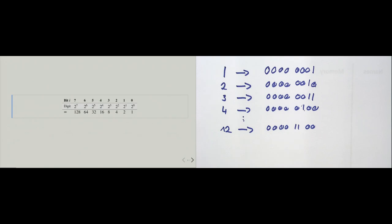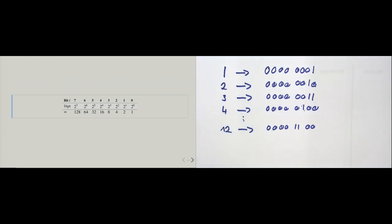Why eight bits? Groups of eight bits are called a byte. Bytes are the common way data is transferred between programs and stored on disk. One bit of information is not a lot, but if we group eight bits as one byte, we can think of every byte as expressing more than just a yes or no — it makes sense to think at a higher level.